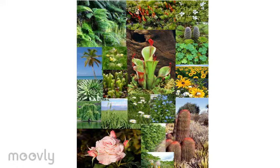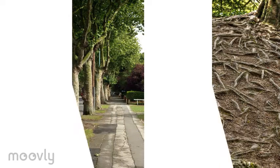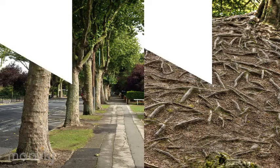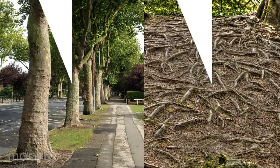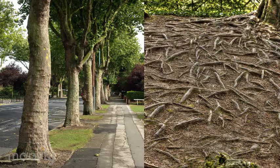Now let's take a look at the roots of a plant. There are two kinds of roots: those that are visible and run across the ground, as seen on the right, or those that are not visible and remain hidden underground, as shown in the left picture.